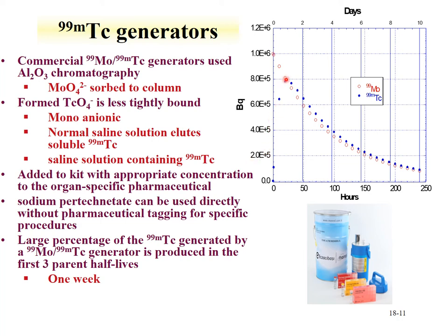The generator systems used to produce technetium-99m are commercially available and run on aluminum chromatography. The molybdenum in the form of molybdate is sorbed to the column. Upon decay of molybdenum-99 to pertechnetate, the pertechnetate is less strongly bound to the alumina column since it is monoanionic, and can be eluted with normal saline solution. The bulk of the technetium activity is generated within the first week. The generator is shipped to a hospital, where the technetium in saline is added to a kit with an organic radiopharmaceutical and introduced into the patient for physiological imaging.